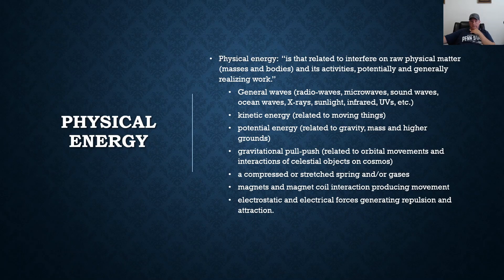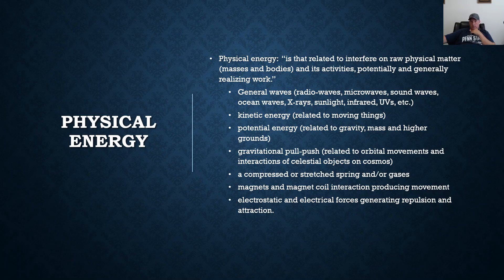Some examples of physical energy: the definition relates to interference on raw physical matter, masses and bodies and their activities. Examples include general waves — radio waves, microwaves, sound waves, ocean waves, x-rays, sunlight, infrared, UV — as well as kinetic energy, potential energy, gravitational energy, compressed or stretched springs or gases, magnets and magnet-coil interaction, electrostatic and electrophores. There are a lot of different kinds of physical energy, but for argument's sake, it's not very efficient to use this to calculate what you're putting into gold.